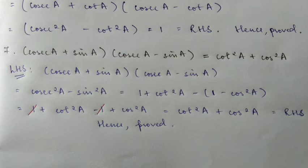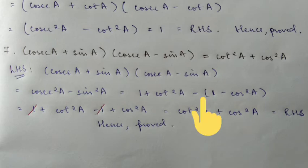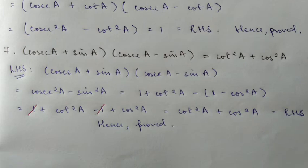For question 7, we identify that cos(e) + sin(e) into cos(e) - sin(e) matches the a plus b into a minus b formula. Applying it gives us a² minus b², where a is cos(e) and b is sin(e). So we get cos²(e) minus sin²(e). On the right-hand side, using direct substitution: cos² equals 1 + cot², and sin² equals 1 - cos². After expanding and simplifying the bracket — the +1 and -1 cancel — we get cot²(e) + cos²(e), which equals the RHS. Hence proved.